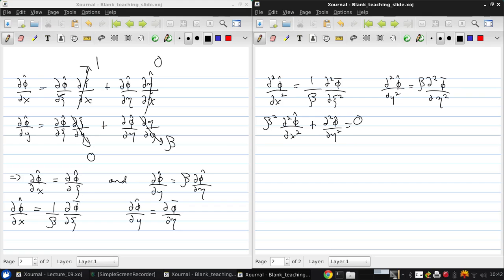Putting these definitions into this equation, what we get is beta squared times 1 over beta squared d squared phi bar d xi squared plus d squared phi bar d eta squared equals zero.